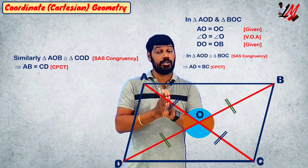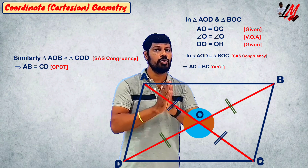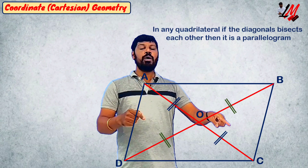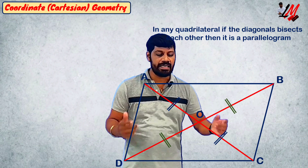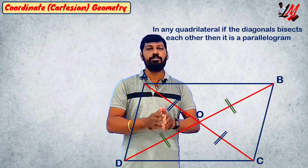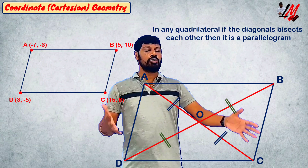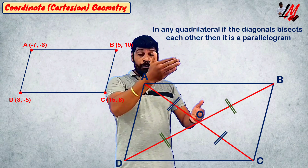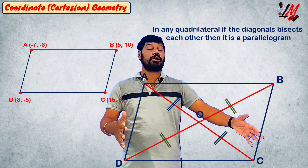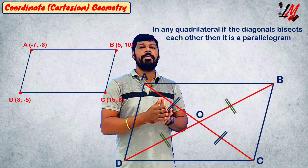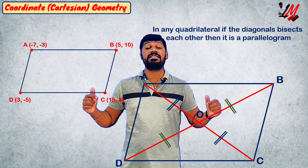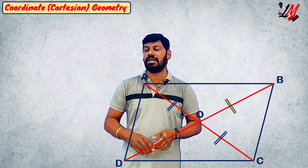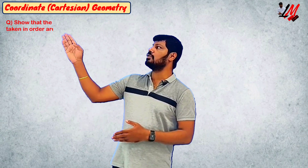So when opposite sides are equal in a quadrilateral, it is a parallelogram. We conclude: if in any quadrilateral the diagonals bisect each other, it is definitely a parallelogram. Now let's go directly to the problem.